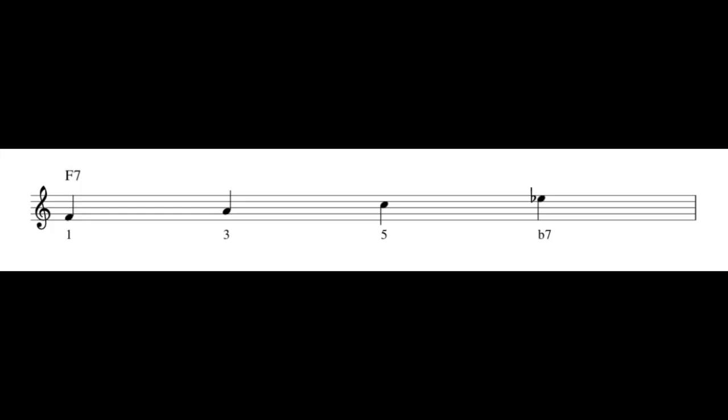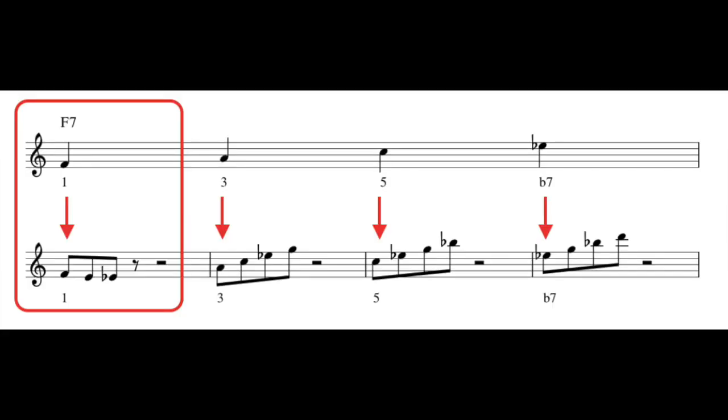So as usual, let's just look through this line one note at a time. There are only four possible starting points for this line. The 1, 3, 5, and 7. So if you start on the 1, you're going to do this line, going down two half steps.